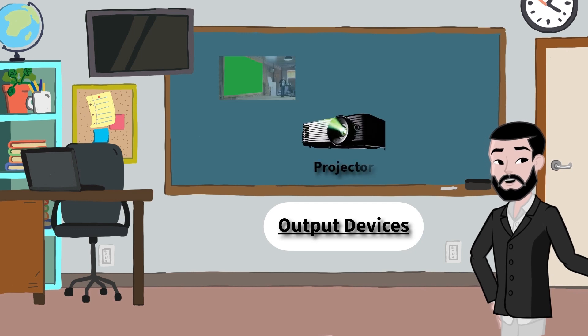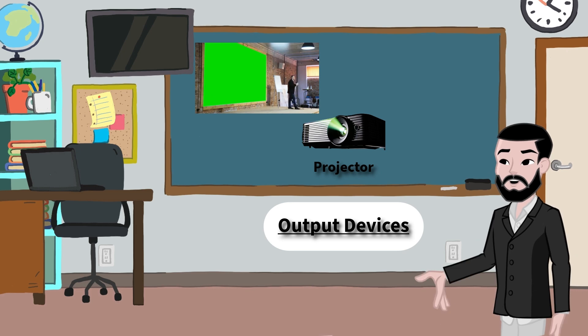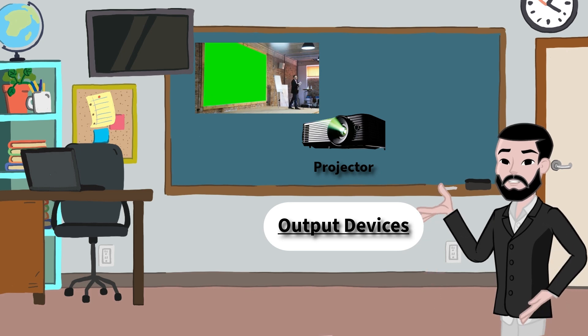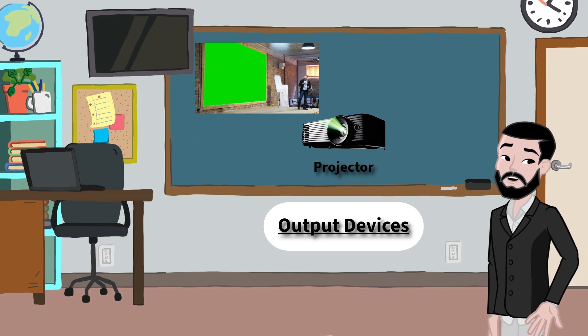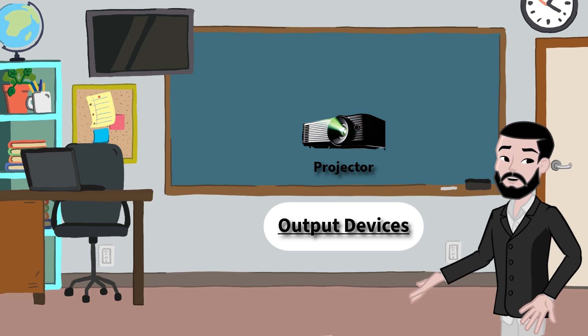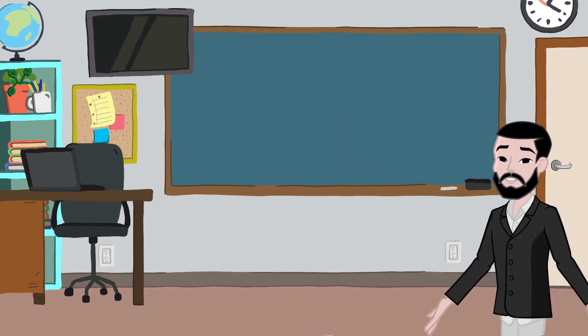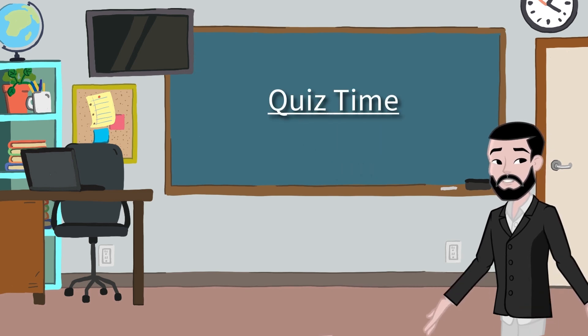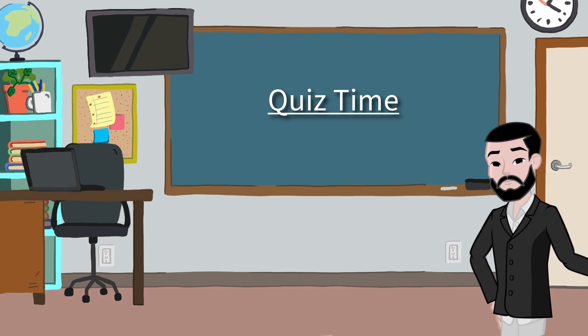A projector is another type of output device. It shows big images on a wall or screen, great for classrooms, movie nights, or presentations. It's like a giant TV powered by your computer. It's quiz time. Let's see how much you remember. Ready? Let's go.